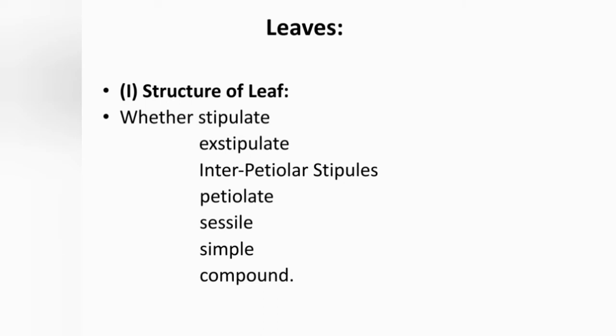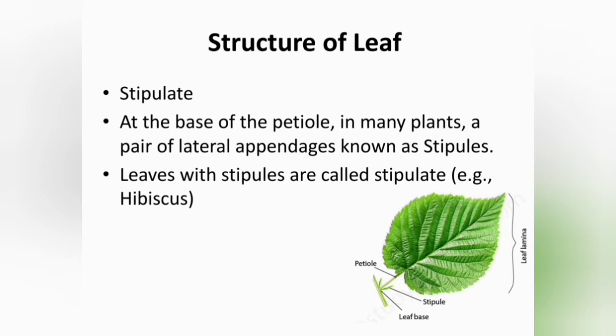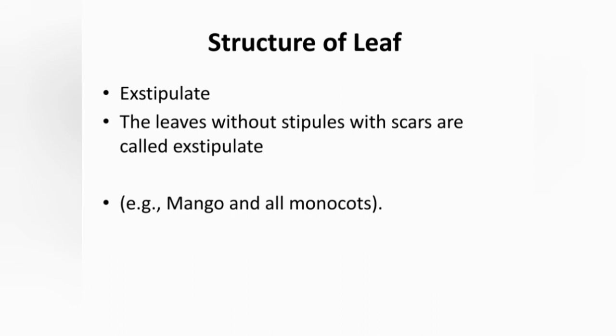Next, we discuss leaf terminology. Based on structure of leaves, it is classified as stipulate, exstipulate, inter-petiolar stipules, petiolate, sessile, simple and compound. Stipulate leaves have appendages called stipules at the base of the petiole. Example: Hibiscus. Exstipulate leaves are without stipules or with scars, meaning the stipules were formerly present but have fallen. Example: mango and all monocots.